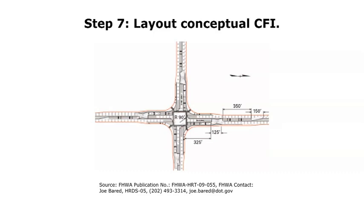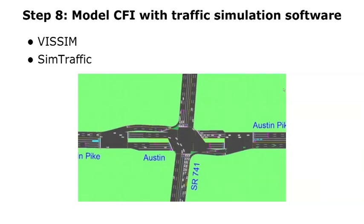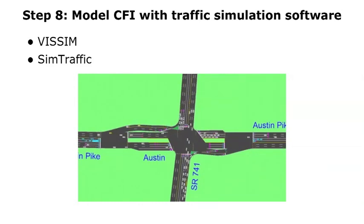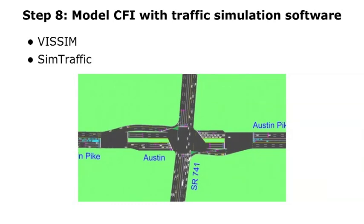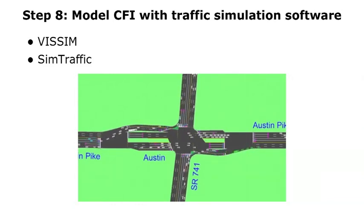Step 8: actually model it in simulation software. You can use Visum; SimTraffic works also. What I'm showing here is a SimTraffic example of a CFI operation. It's labeled Austin Peay and Sarah at 741, but it's not actually a representation of those streets as constructed — I've modified the model with different lanes to show a more typical CFI operation than what's going to be constructed out there.